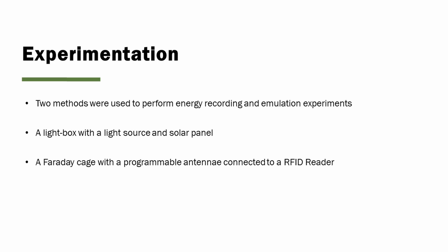Two methods were used to perform energy recording and emulation experiments: a lightbox with a light source and a solar panel underneath to harvest energy, and an RF reader in a Faraday cage with a programmable antenna. The lightbox had 256 intensity settings and was enclosed to shield it from any outside light source. Both of these setups were used to test how ECHO performed versus traditional methods of replay and recording.